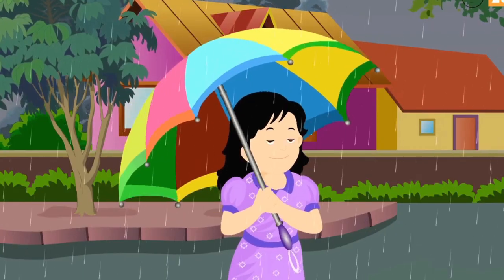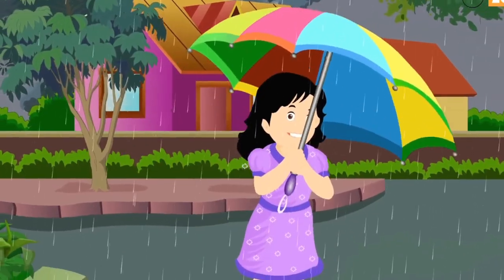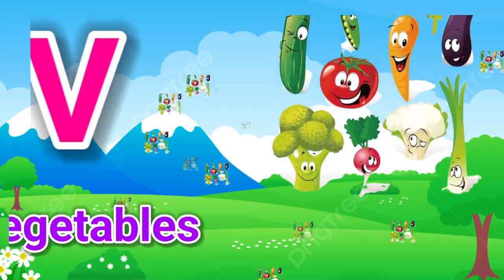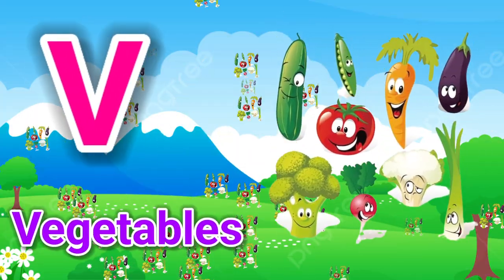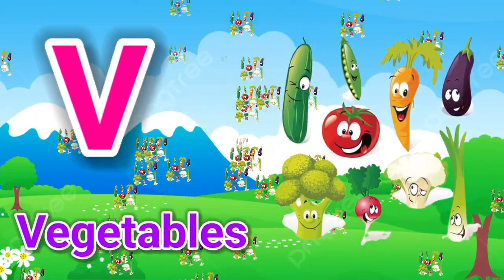I have a big umbrella, which says V is for Vegetables.